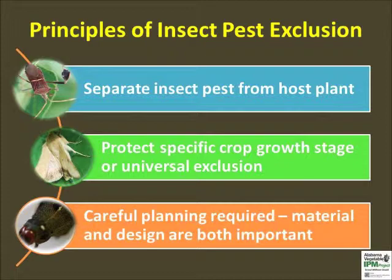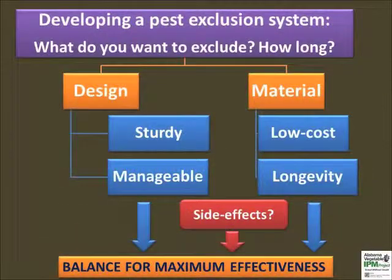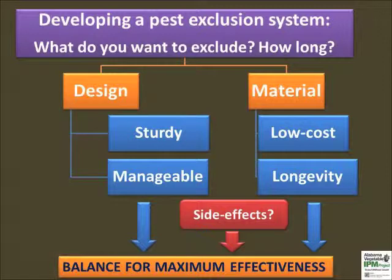Designs can vary greatly depending on the target insect and materials available. Before developing a strategy, we recommend viewers to first think about pests you want to exclude and the length of protection needed. Insect exclusion practices have two basic features — design and material — that have to be in balance for best results. The design of a pest exclusion system should be sturdy and materials should be low cost for wide-scale use.